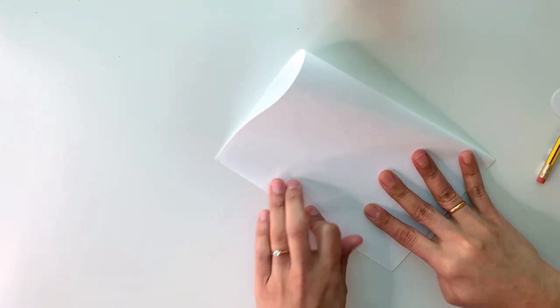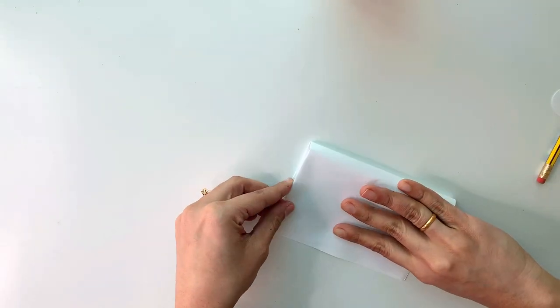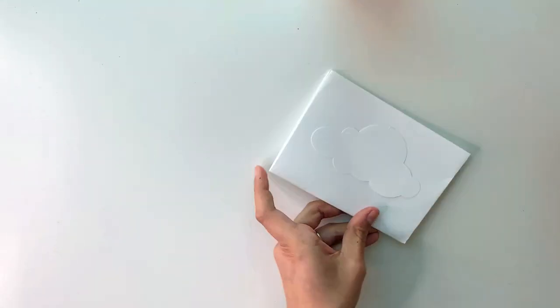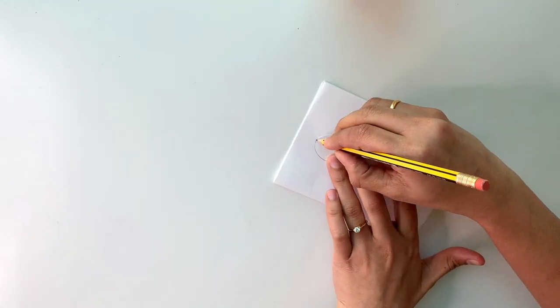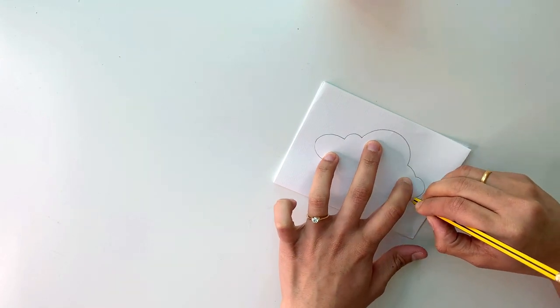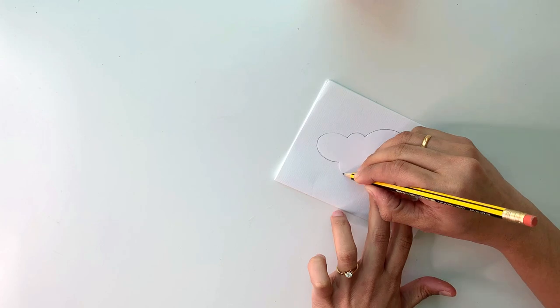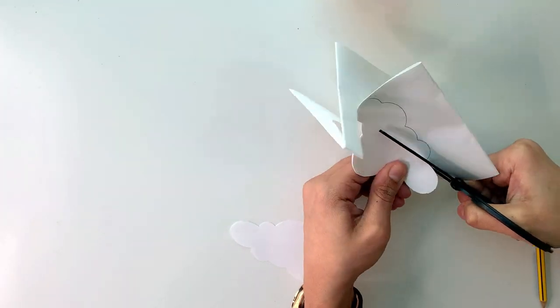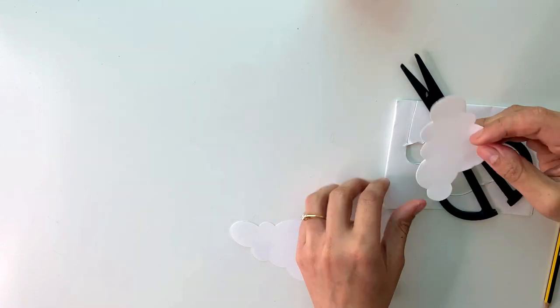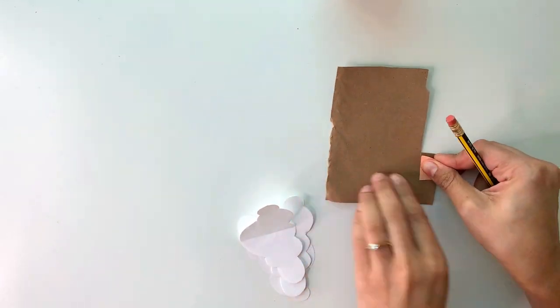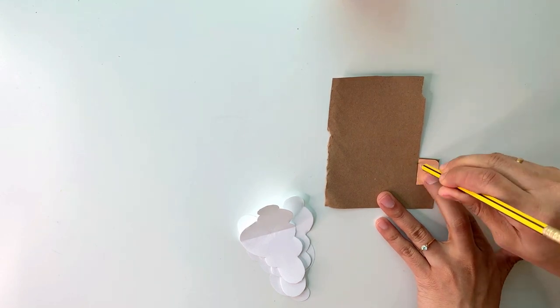Take an A4 size white paper, fold it into half and then fold it into half again. Then trace the cloud template onto that and cut it out. Now fold the clouds from the middle. In the same way you have to make as many clouds and balloons as you want.